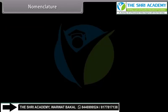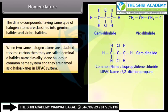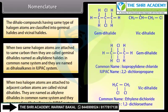Dihalo compounds having the same type of halogen atoms are classified into geminal halides and vicinal halides. When two same halogen atoms are attached to the same carbon, they are called geminal dihalides — named as alkylidene halides in the common name system and as dihaloalkanes in the IUPAC system. When two halogen atoms are attached to adjacent carbon atoms, they are called vicinal dihalides — named as alkylene dihalides in the common name system and as dihaloalkanes in the IUPAC system.